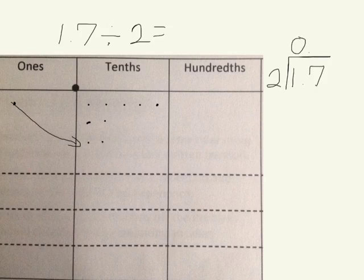Now, when we take our 10 tenths and add them to our 7 tenths that we have, we have 17 tenths.